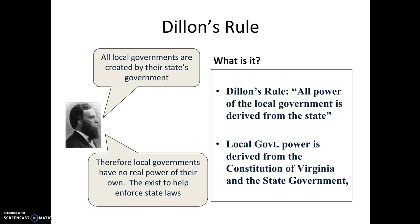The relationship between state and local government is shaped by a ruling called Dillon's Rule. This was created by a judge many, many years ago, and it basically sets up how local government and state government are supposed to work together. Local government is supposed to be kind of subservient to state government. Dillon's Rule states that all power of the local government is derived from the state, meaning that states create local governments and that local governments are beholden to state government and have to work within the restrictions that state law creates.